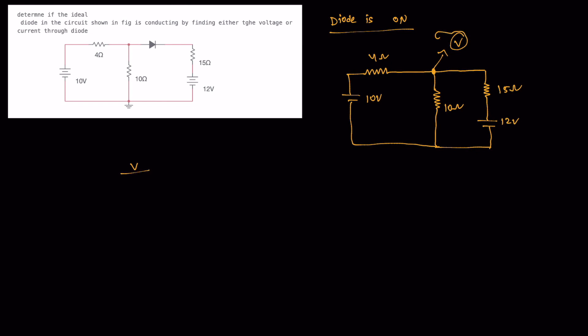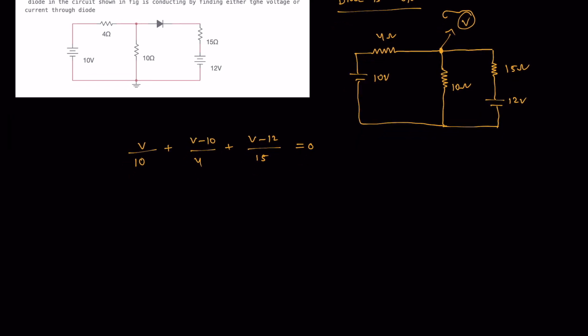Here it is at node V: V/10 + (V - 10)/4 + (V - 12)/15 equals 0. This is a pretty simple and basic fundamental KCL equation.